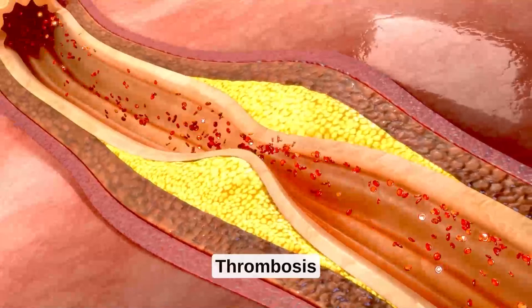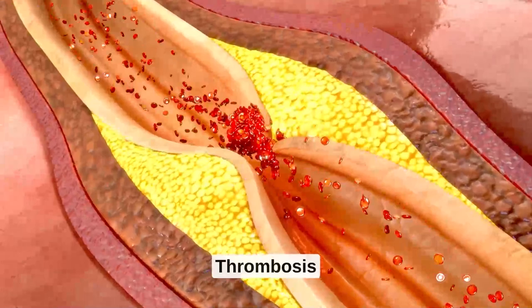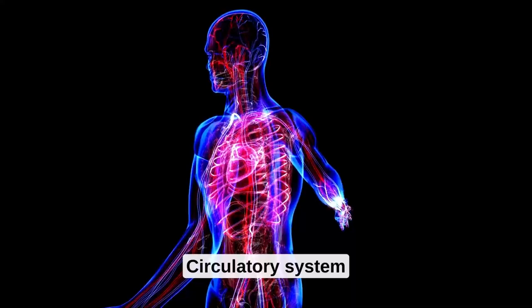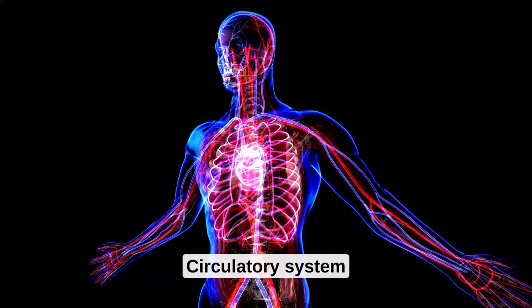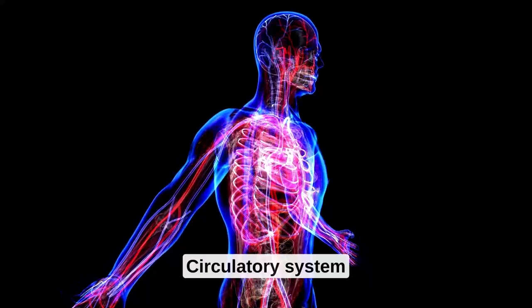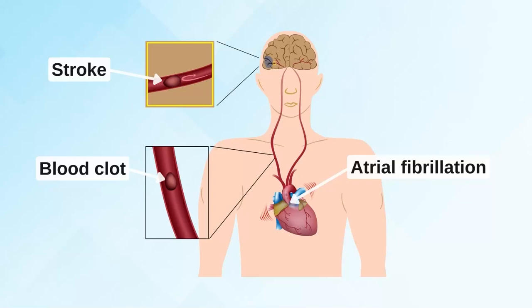The same applies not only for thrombosis into the lungs, but also when thrombosis goes into your brain. The heart pumps blood not only toward the lungs but to your whole body. When blood goes from the left ventricle through the aorta and up to your brain, that can cause a stroke. The risk of getting a stroke from atrial fibrillation is high.